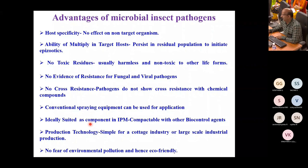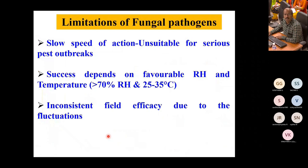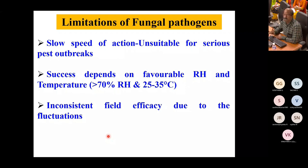It is suitable as an IPM component and compatible with other biocontrol agents, though screening and testing must be done before recommendation. Production technology is simple for cottage and large-scale industries, and farmers can be trained to produce it themselves. It is environmentally friendly and pollution-free. However, one limitation is the slow action — it is not suitable for very serious outbreaks, as it takes time for establishment. There is also inconsistent field efficacy due to fluctuations in temperature and humidity.